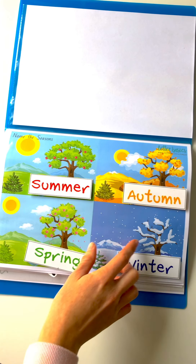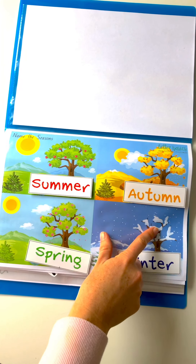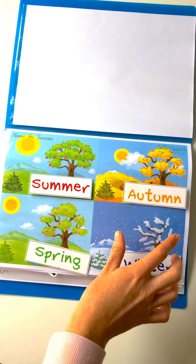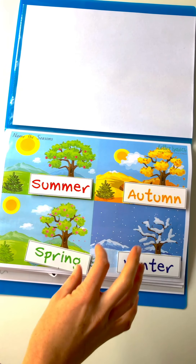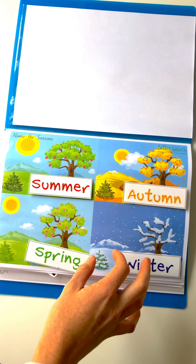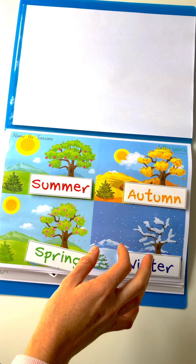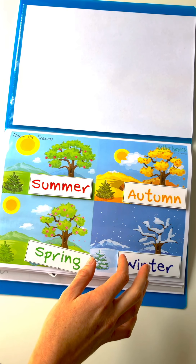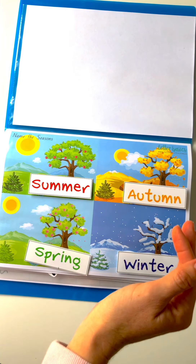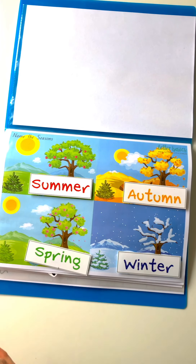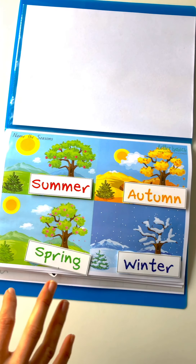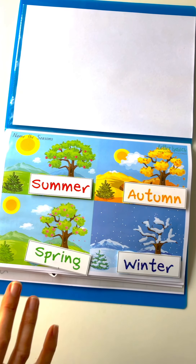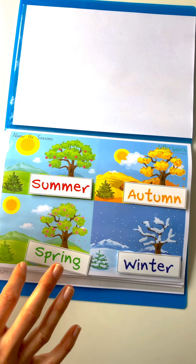Hello, how are you? We've finally done a seasons lookbook, so we've got our four seasons: summer, autumn, winter, and spring. I have gone around this way as it cycles, and for the first activity we're going to name the seasons.